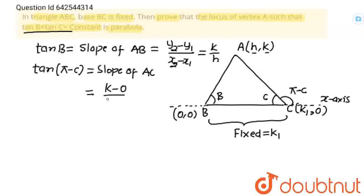Well, k1 is fixed. This is not variable. Always remember. And we know that tan pi minus theta is minus tan theta. And this is minus tan theta and theta is C. So, we can write tan C is equals to, I am going to take this minus sign to RHS. This will become minus k upon h minus k1.